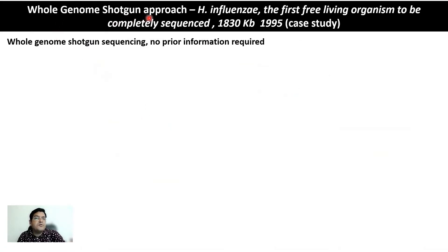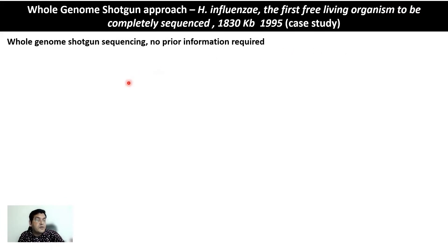Let's see how the whole genome shotgun sequencing approach was used to sequence Haemophilus influenzae — the first free-living organism to be completely sequenced. The genome size is around 1.8 megabases or 1,830 kilobases. This 1995 paper is used as a case study to see how the WGS strategy was applied and how the library was screened to bridge all gaps and obtain the complete genome sequence. In WGS, no prior information is required; you directly sequence the entire DNA and assemble it based on overlap data.